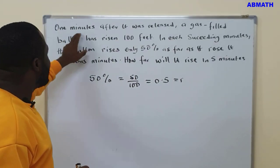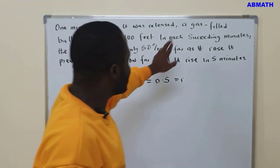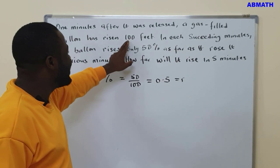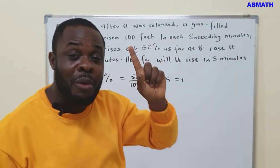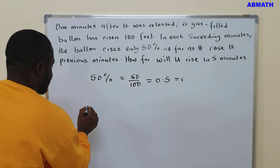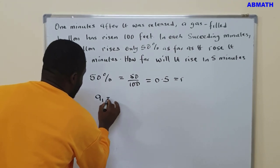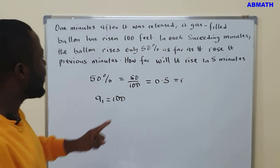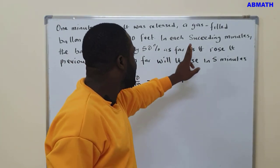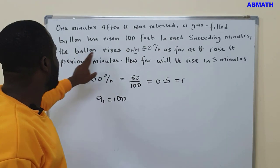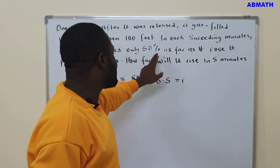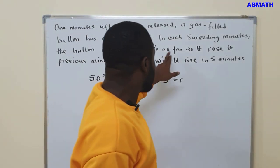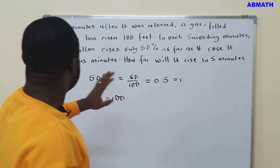Now, they say one minute after it was raised, a gas-filled balloon has risen 100 feet. So they say one minute. So the first term, A1, is 100. They now say in each succeeding minute, the balloon raises only 50%. And we have gotten that the 50% is common ratio as far as it rose in previous minutes.